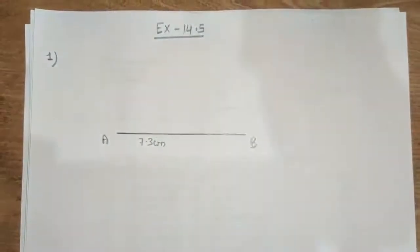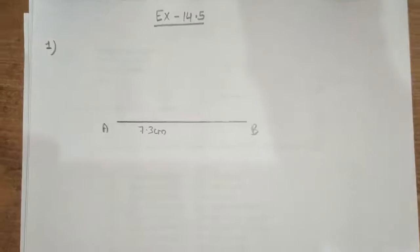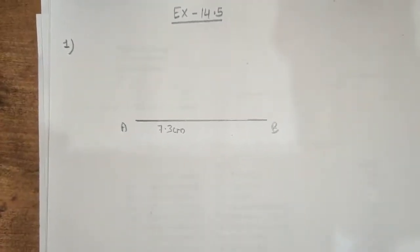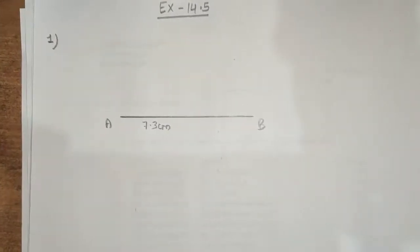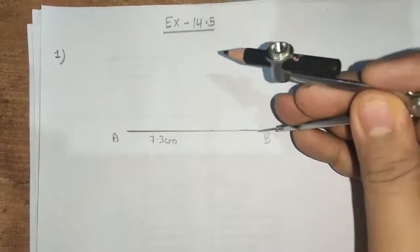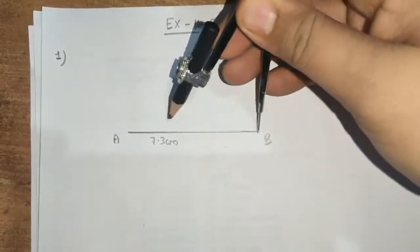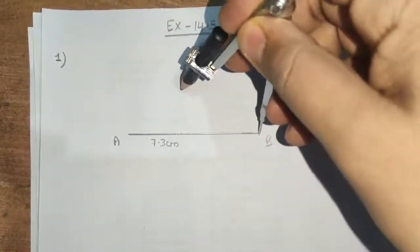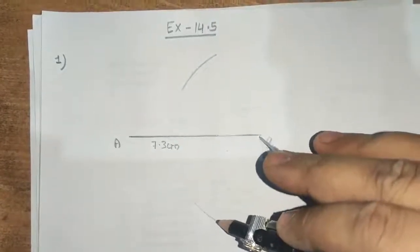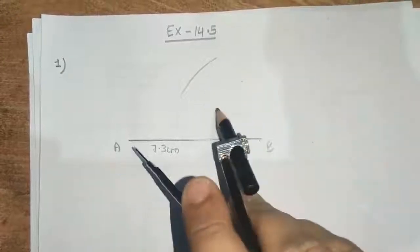Now, it is written that find its axis of symmetry. Axis of symmetry means which will divide this into two equal parts. Now, take more than half. I have taken more than half of the line. Draw first arc here and the other arc below the line and first arc above the line.